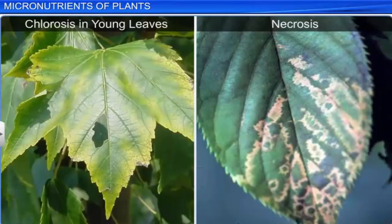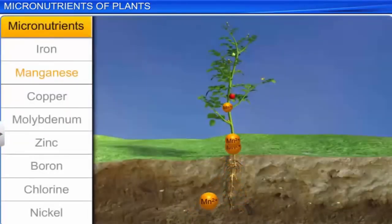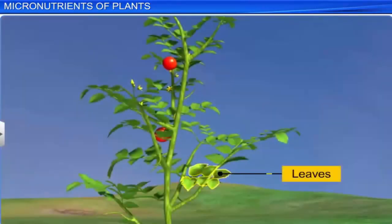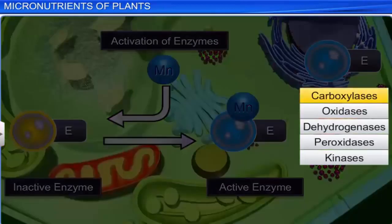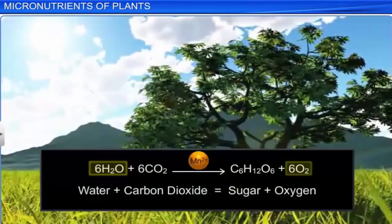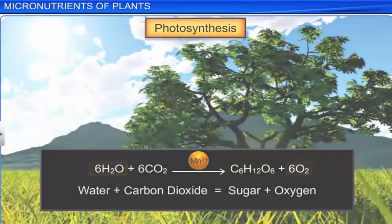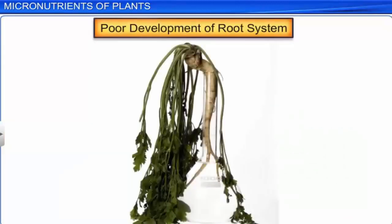The deficiency of iron leads to symptoms like chlorosis in young leaves, necrosis, and inhibition of chloroplast formation. Manganese is another trace element which is absorbed as manganous ions. It is required in leaves and seeds. It activates enzymes like carboxylases, oxidases, dehydrogenases, peroxidases, and kinases. It plays an important role in the splitting of water to liberate oxygen during photosynthesis. Deficiency symptoms include chlorosis, gray spots on leaves, and poor development of the root system.